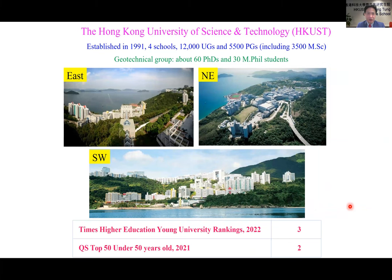Here are pictures showing our campus from the northeast and from the southwest. Our university was established in 1991 and has four major schools. Currently we have 12,000 undergraduate students and about 5,500 postgraduate students. In our geotechnical group, we have 60 PhD students and about 30 MPhil students. Although we are young, we are well recognized, ranked number three and two among young universities by Times Higher Education and QS respectively.